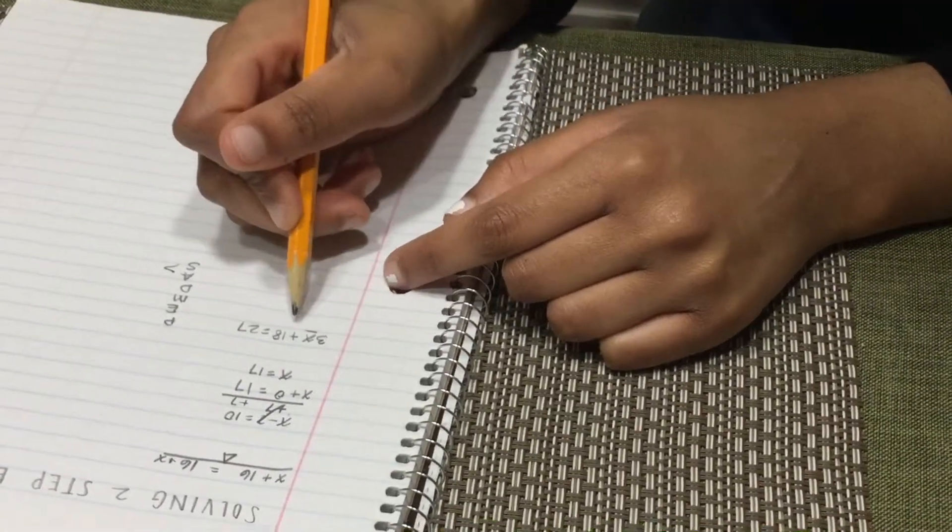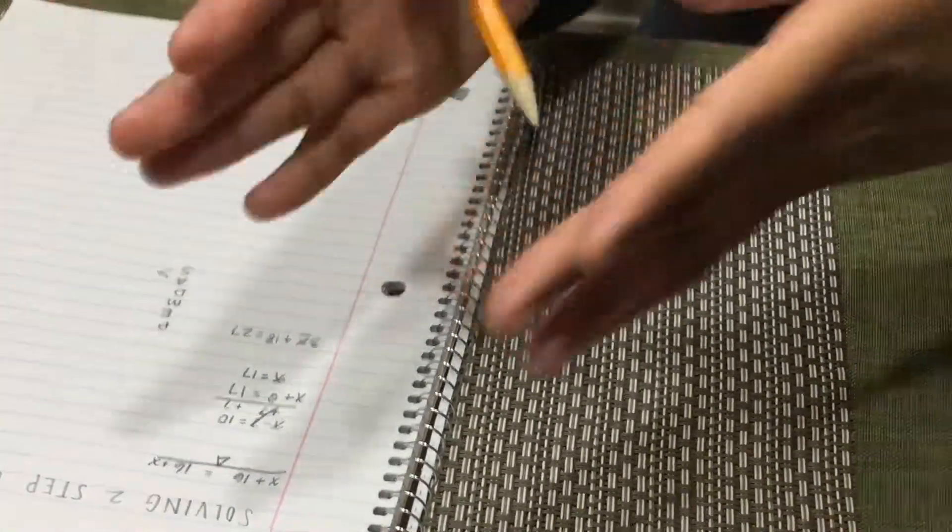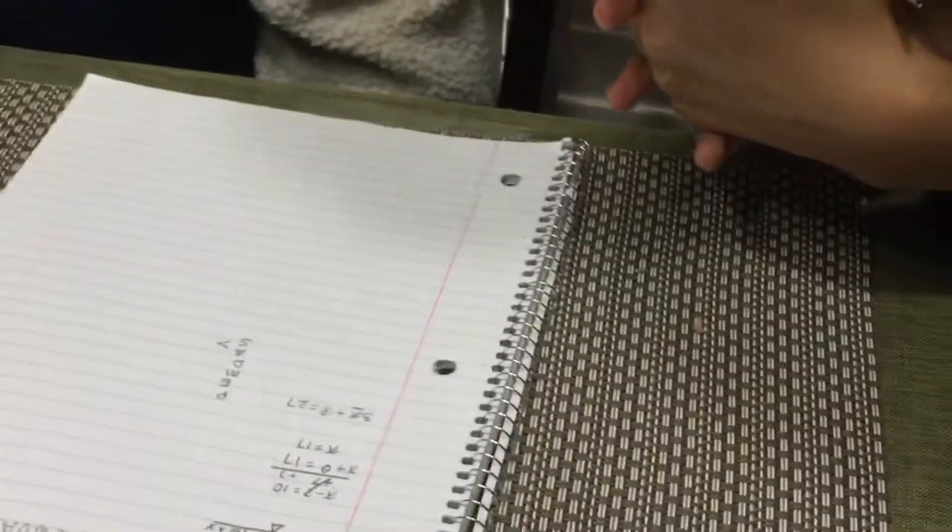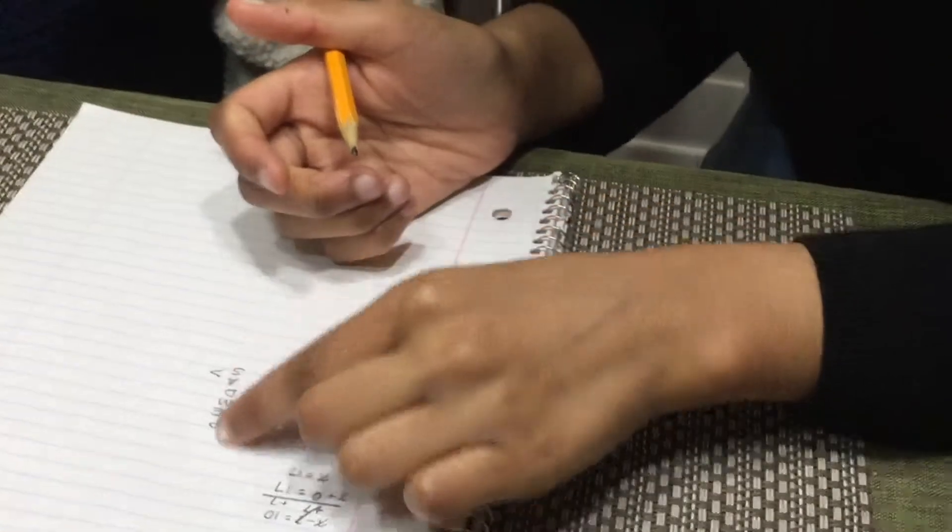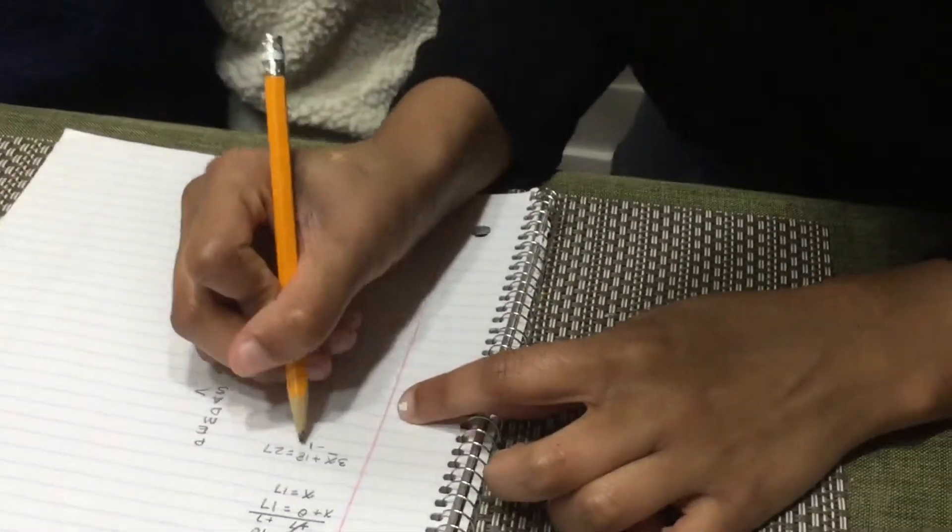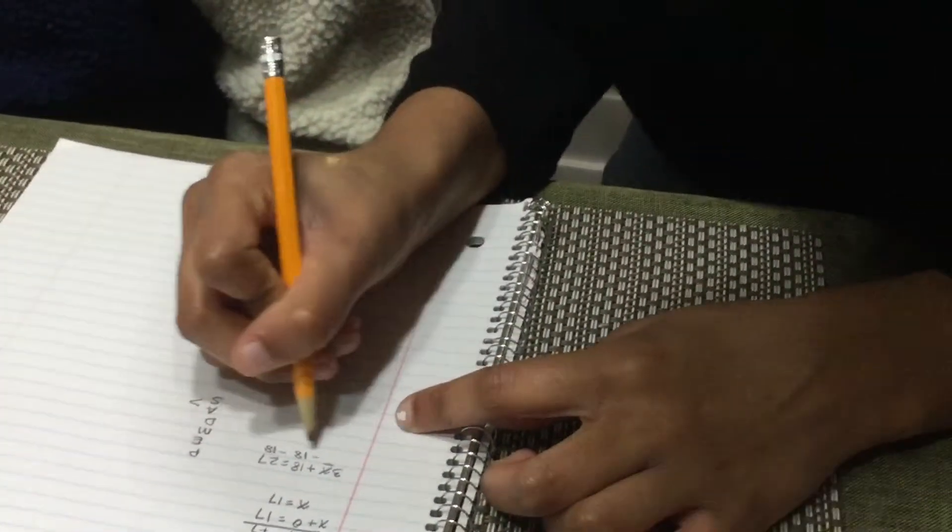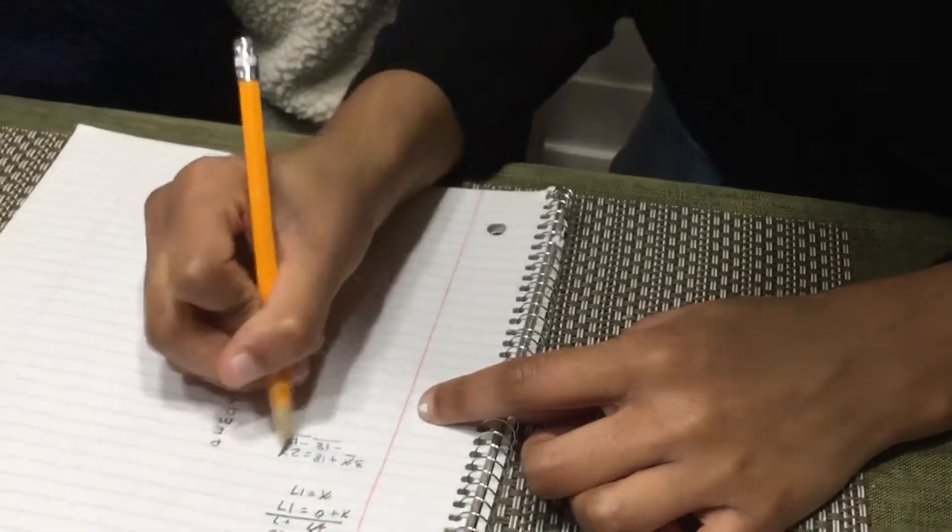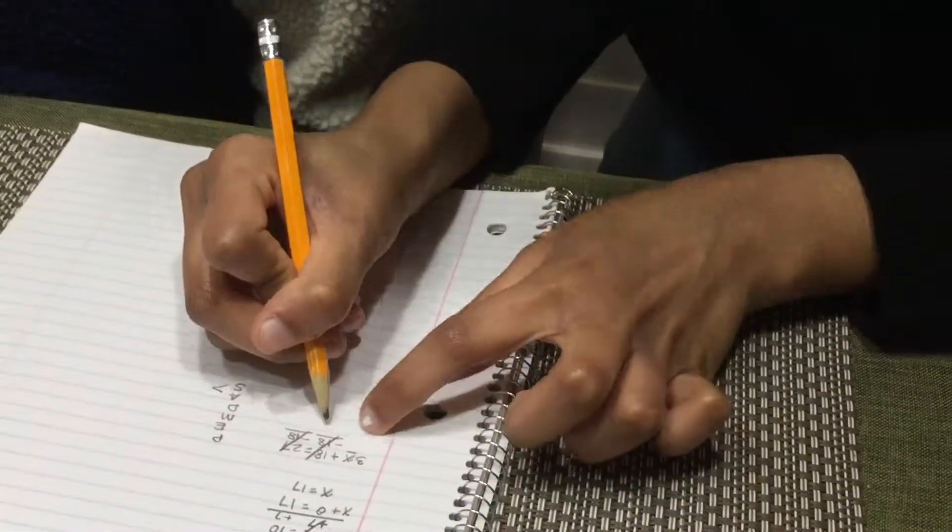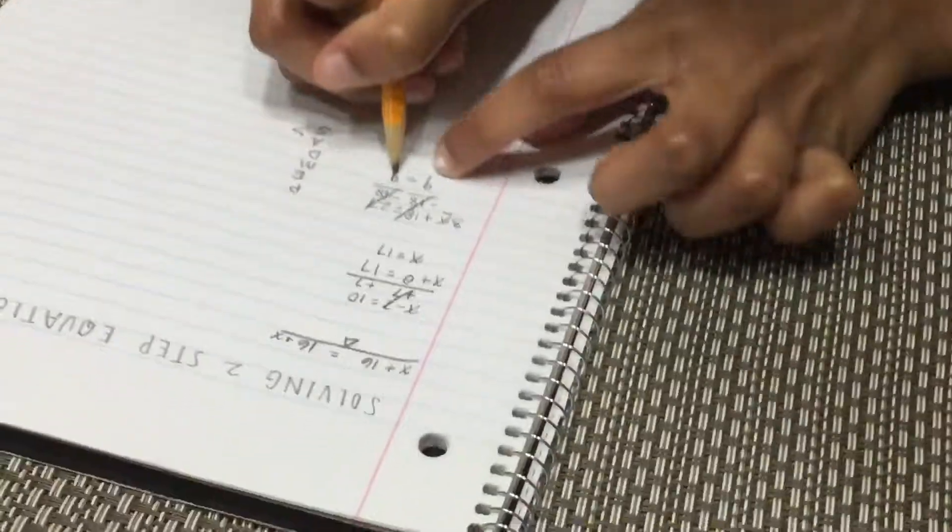So what does that mean? So we have to remove and isolate x. So what do we have to do in this equation? Subtract 18? Yeah. And remember, we're following that order. So we're going to subtract 18 on both sides. And what does that equal? 9 equals 0. So we're going to cancel that out. And this equals 9.